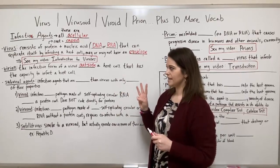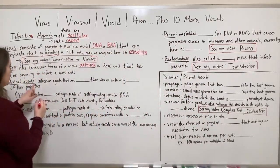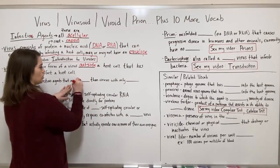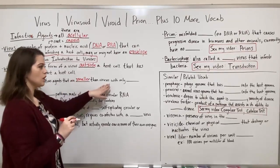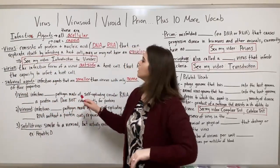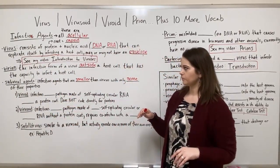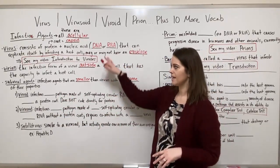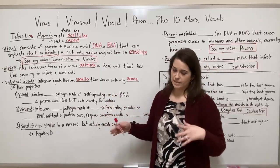Now we're going to talk about three different sub-viral agents. Sub-viral agents are infectious agents that are smaller than viruses, with only some of their properties. As we go through these three types, you'll see they're consistently missing things found in viruses — having some viral properties but lacking others.